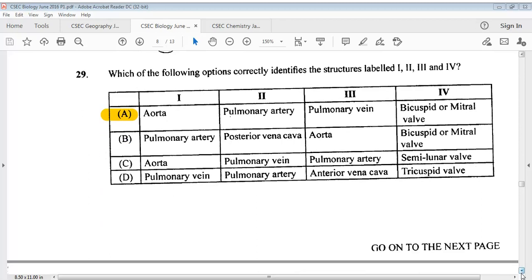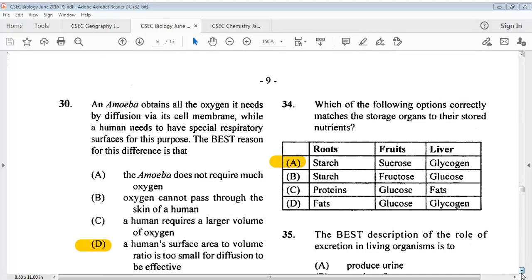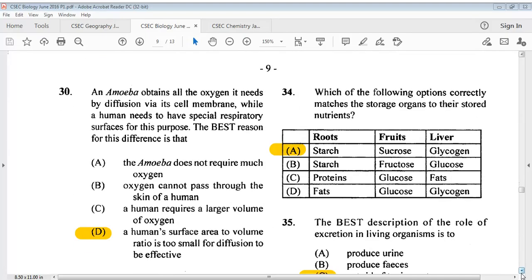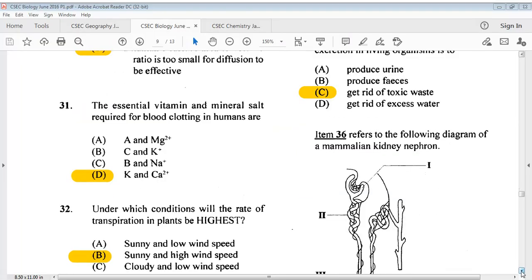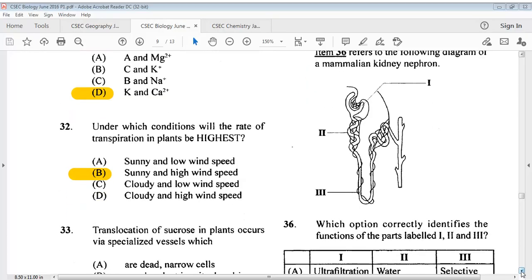The answer for question 30 is D. Question 31, the essential vitamin and mineral salt required for blood clotting in humans are? The answer is D. Question 32, under which conditions will the rate of transpiration in plants be highest? The answer is B, sunny and high wind speed.